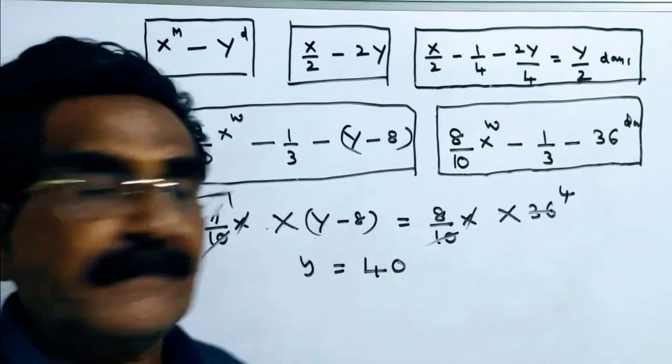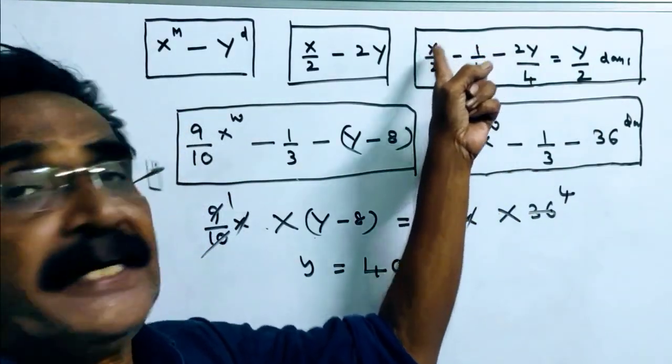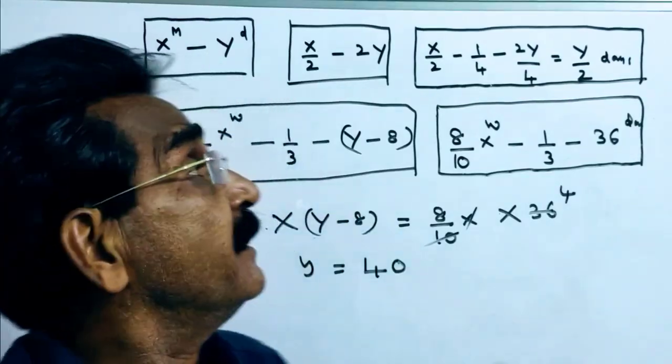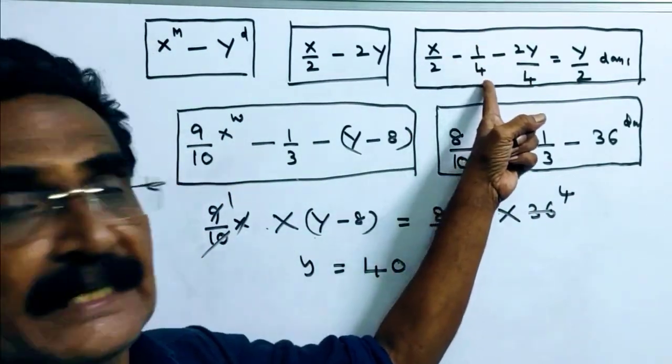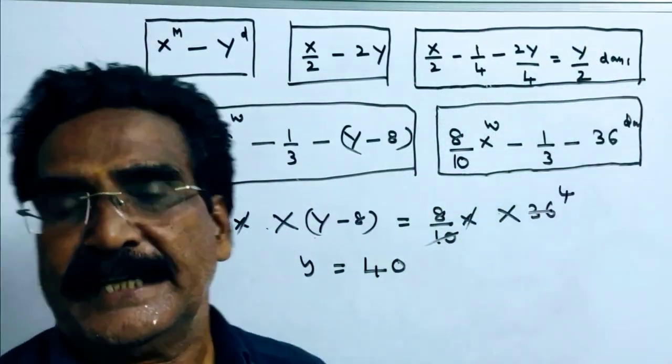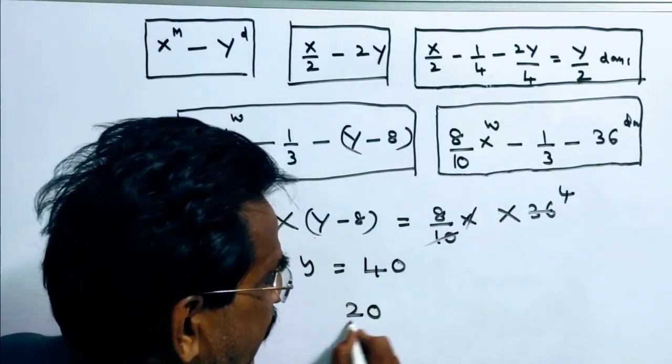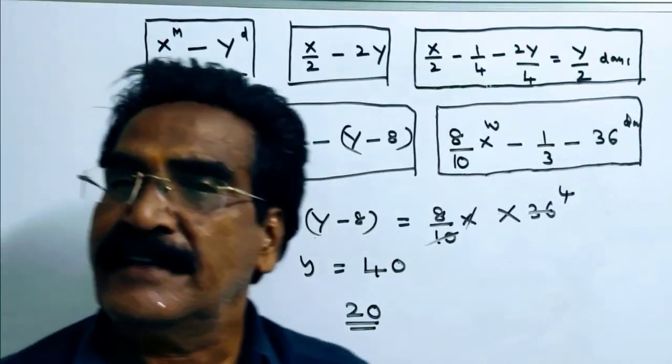Friends, Y is equal to 40. That implies 0.5 X men can complete 1 by 4 work in 40 by 2, that is 20 days. 20 days is your answer. Thank you.